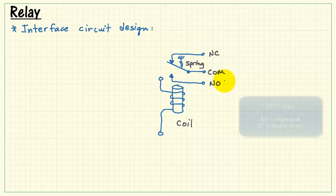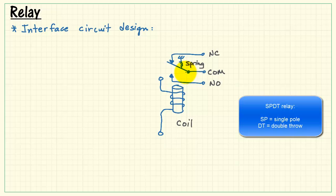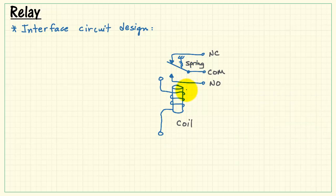Here we have the switch contacts. We have the common, a spring that holds the switch in one position. And the spring is providing a restoring force when the coil pulls down that end of the switch. So one side of the switch is normally closed, while the other is normally open.